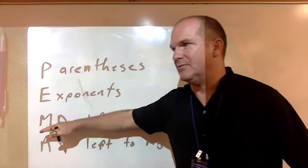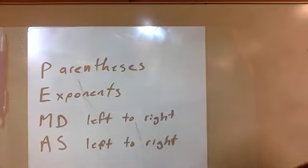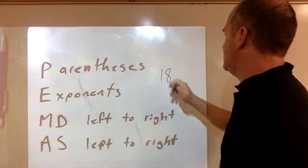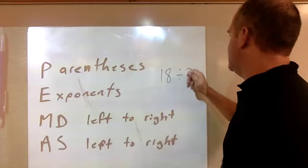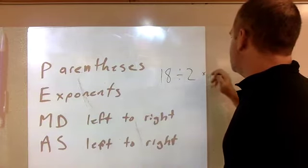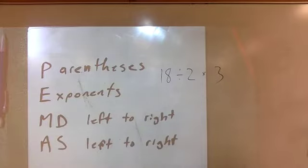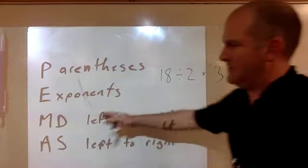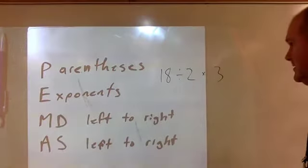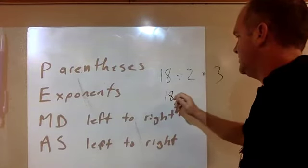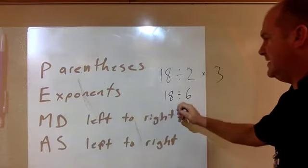So let me give you an example of a common mistake: 18 divided by 2 times 3. If you strictly follow PEMDAS and you say I have to multiply before I divide, then you would multiply the 2 times the 3 because you're multiplying first, and then you would divide and your answer would be 3.